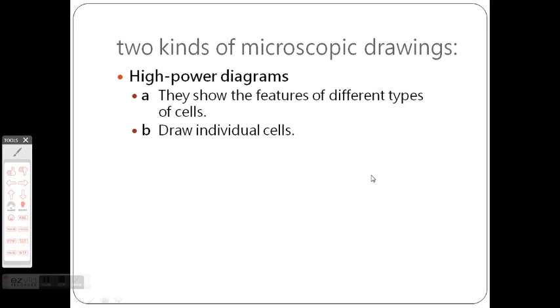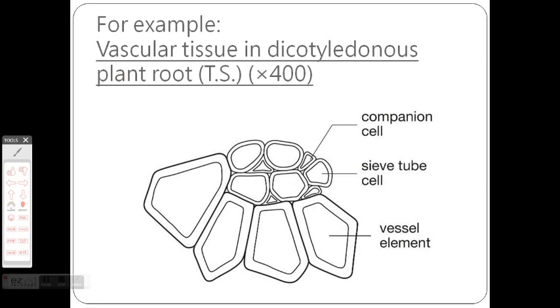The next one is the high power diagrams. For high power diagrams, you have to draw individual cells. Sometimes you can draw more than one cell, sometimes just one cell, depending on what you want to indicate. For example, this one is a plant root tissue. You want to show the tissue, so you draw more than one cell. Even better if you can use dots to indicate the color difference.